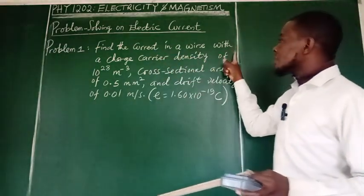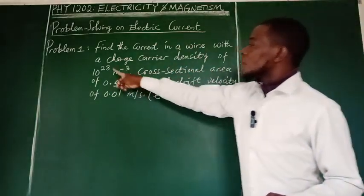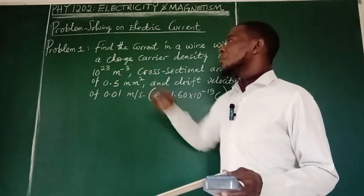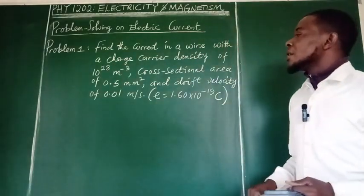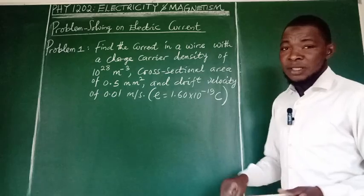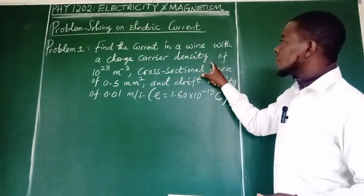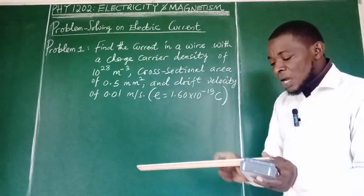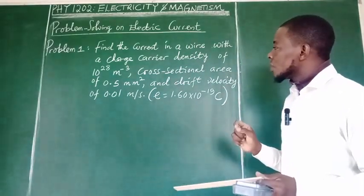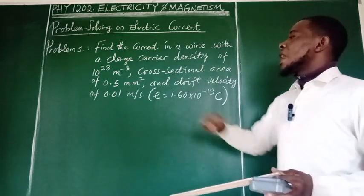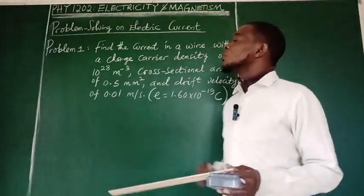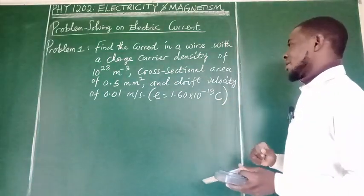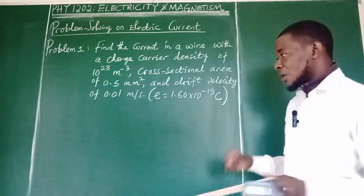So if you look at the problem here, you will see that we are given a charge carrier of 10 to the power of 28 per cubic meter. This means in this material, this wire, every one cubic meter volume has 10 to the power of 28 free electrons that generate current.